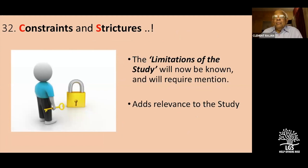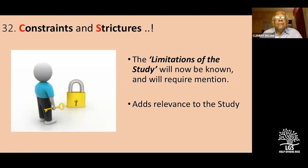After you've done all this, you realize there are some limitations — your period of follow-up is not long enough, your population was not ideal, you had a bias in selection of patients. These limitations, if you put them down honestly — your constraints and strictures — will actually add relevance to your study.